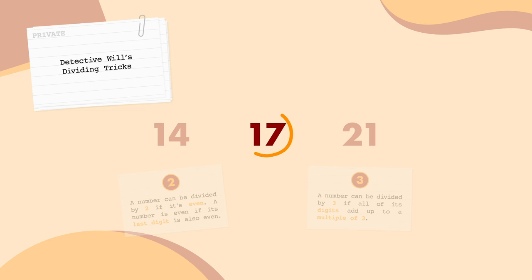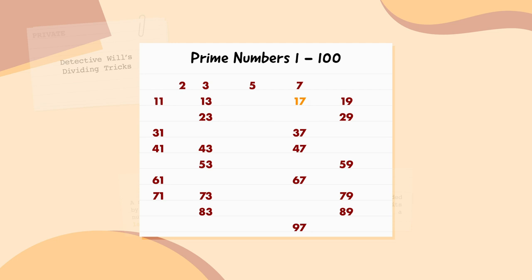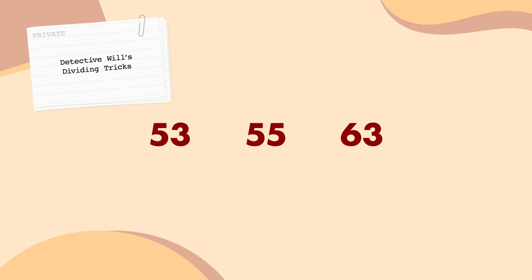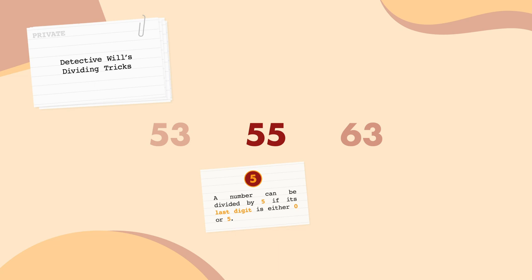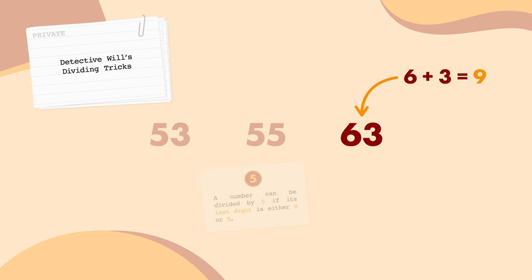Here are the next numbers: 53, 55, 63. Let's look at 53 — its last digit is 3, which isn't even, so it can't be divided by 2, 4, or 6. 5 plus 3 equals 8, which isn't a multiple of 3 or 9, and it doesn't end in 0 or 5. I think 53 could be a prime number. What about 55? It ends in a 5, which means it's a multiple of 5, so 55 can't be prime. Let's check 63 — 6 plus 3 equals 9, so 63 must be a multiple of 9 and can't be prime either. That must mean 53 is the prime number. There it is.